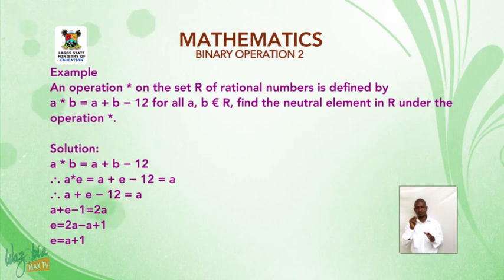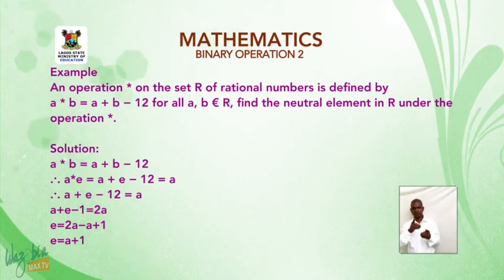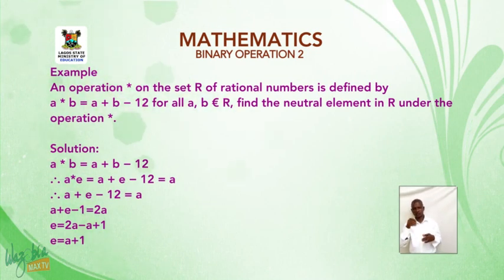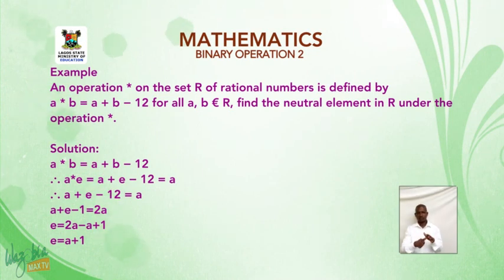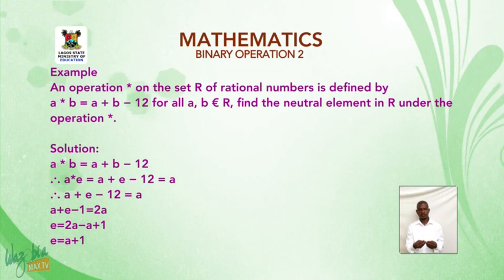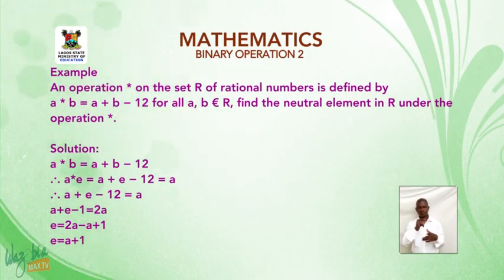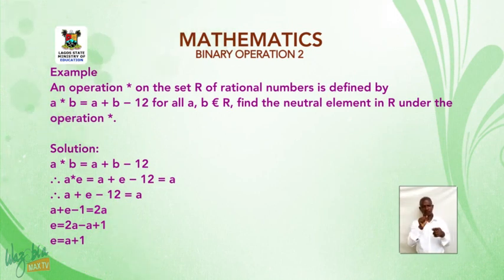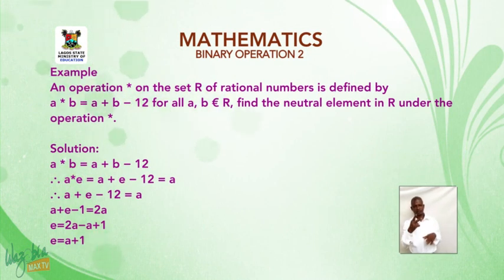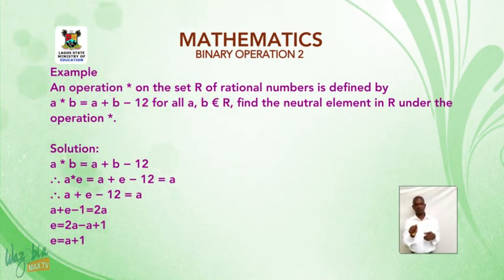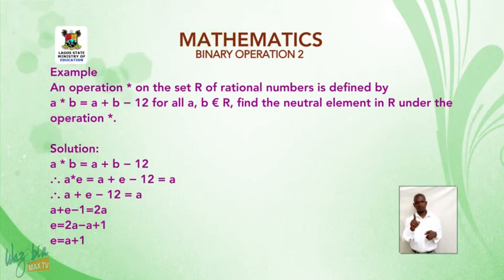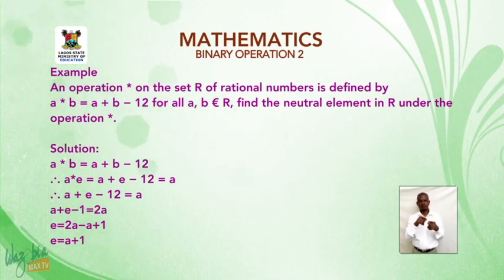Example: an operation star on the set ℚ of rational numbers is defined by a★b = (a + b − 1)/2. To find the identity element e: a★e = (a + e − 1)/2 = a. Therefore, a + e − 1 = 2a. Therefore, e = 2a − a + 1. Therefore, e = a + 1.